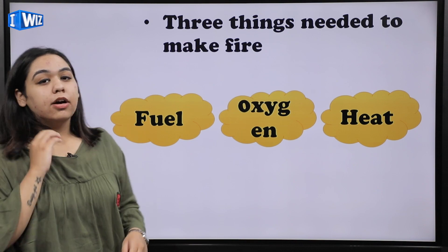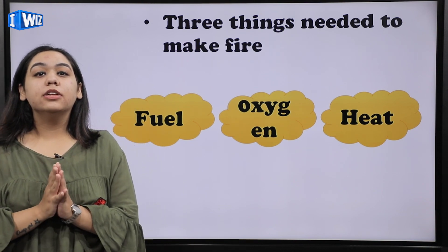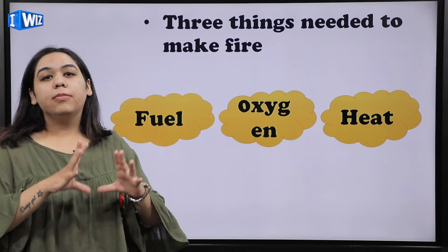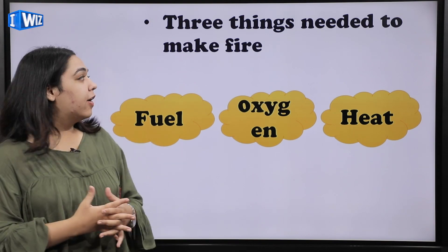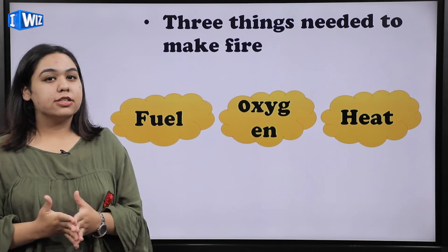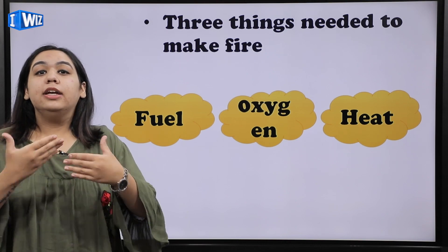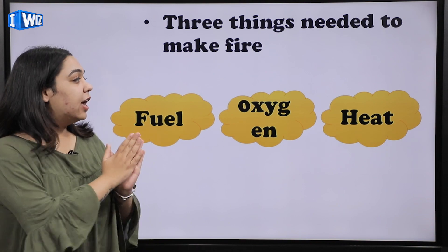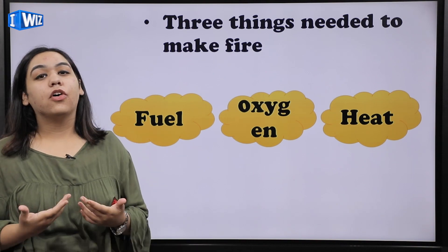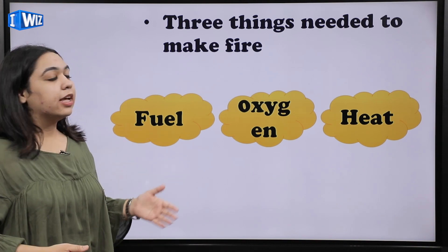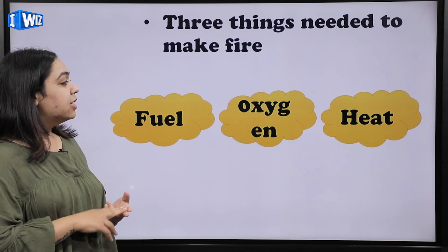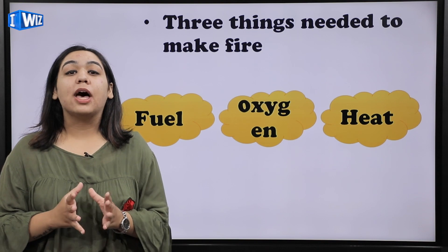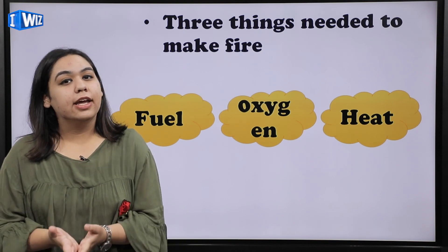Now we are going to talk about the things that we need for making fire possible. There are mainly three things — if there is absence of any of these three things, fire will not take place. So the three things are: first is fuel, the next one is oxygen, and heat. These three things are what you need simultaneously in order to create fire.